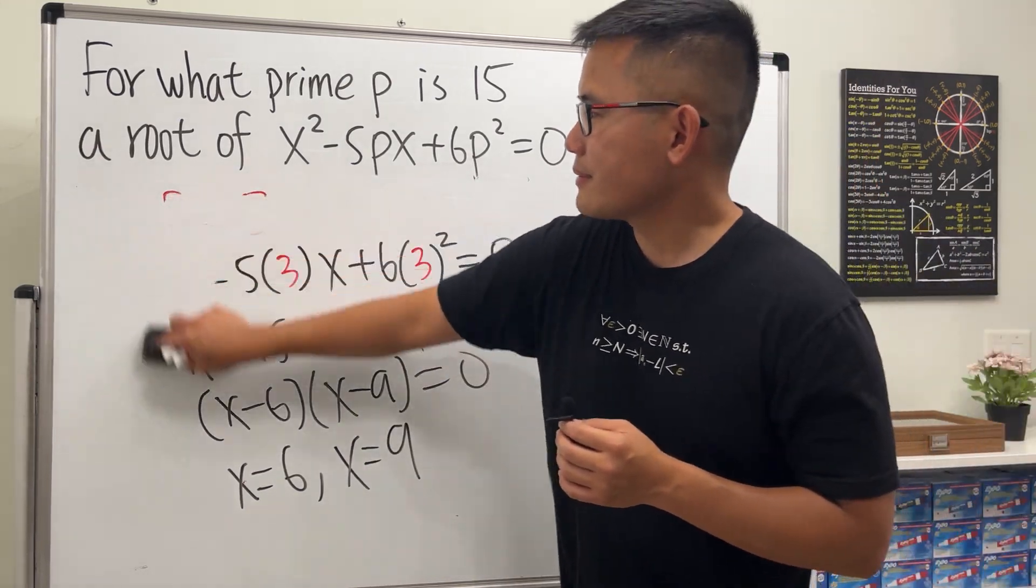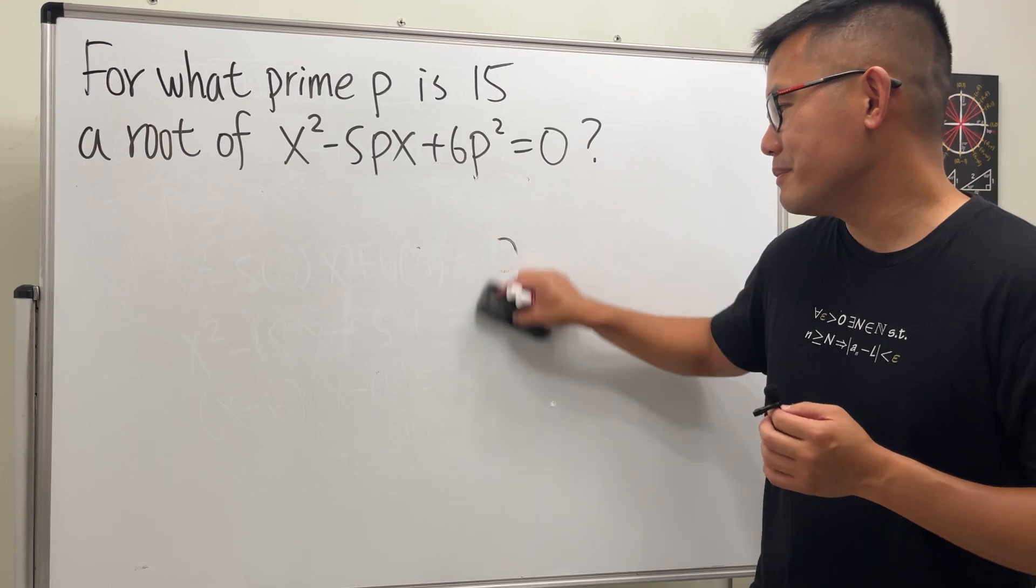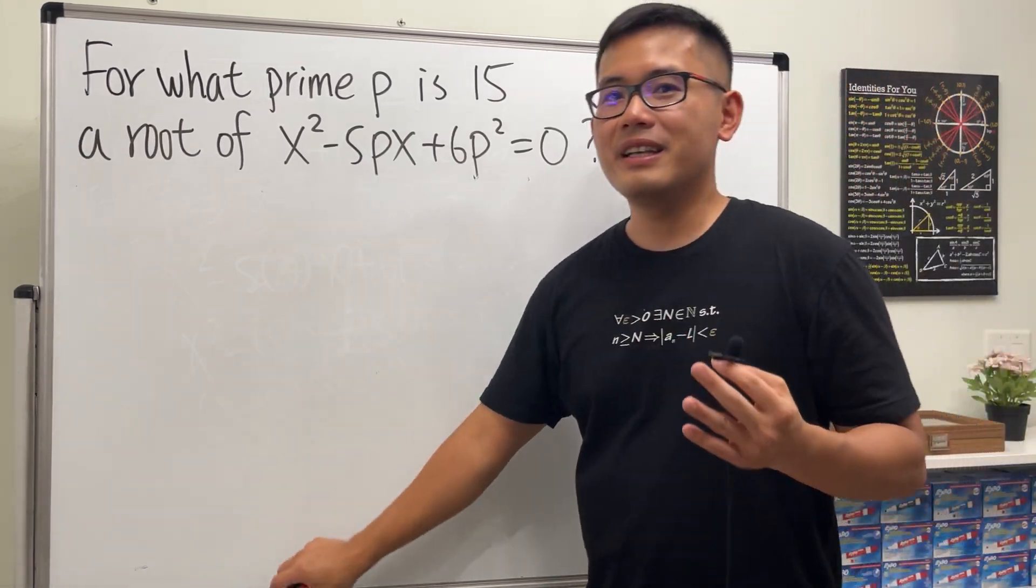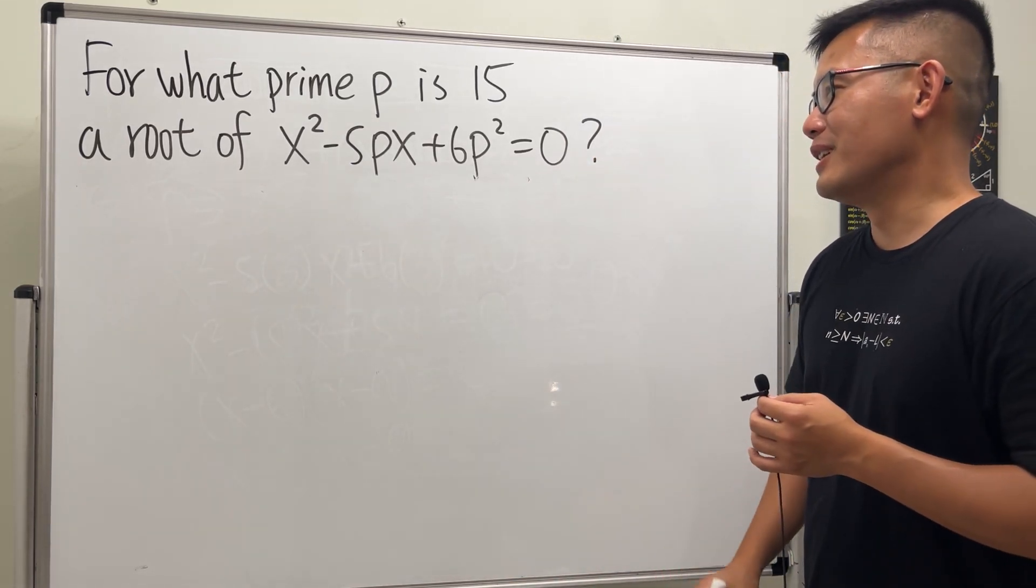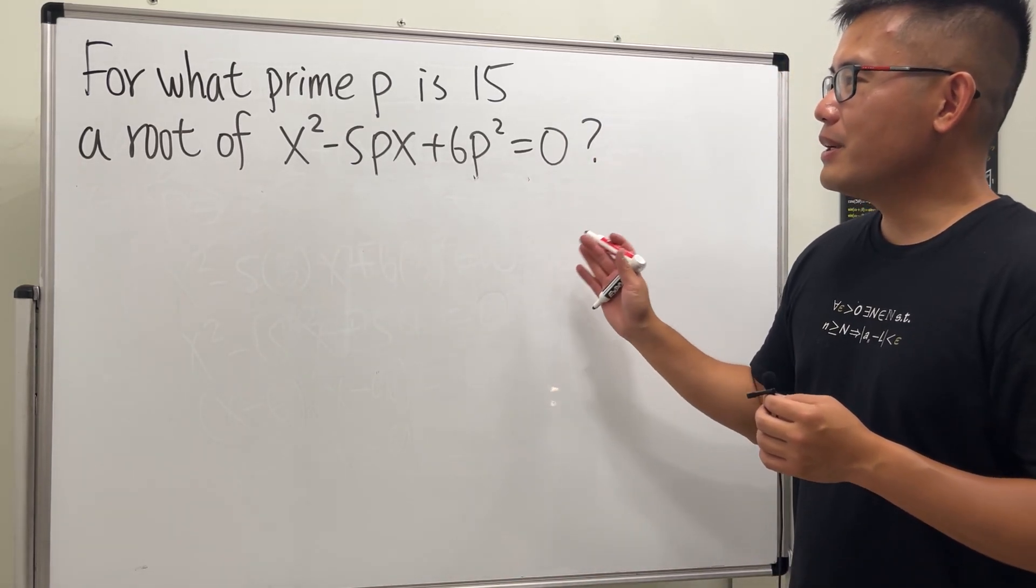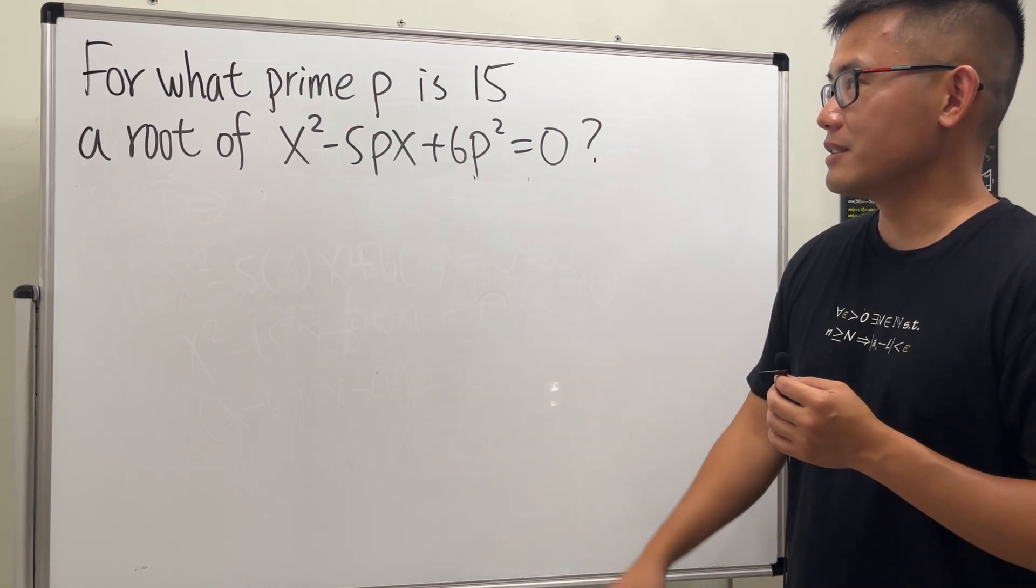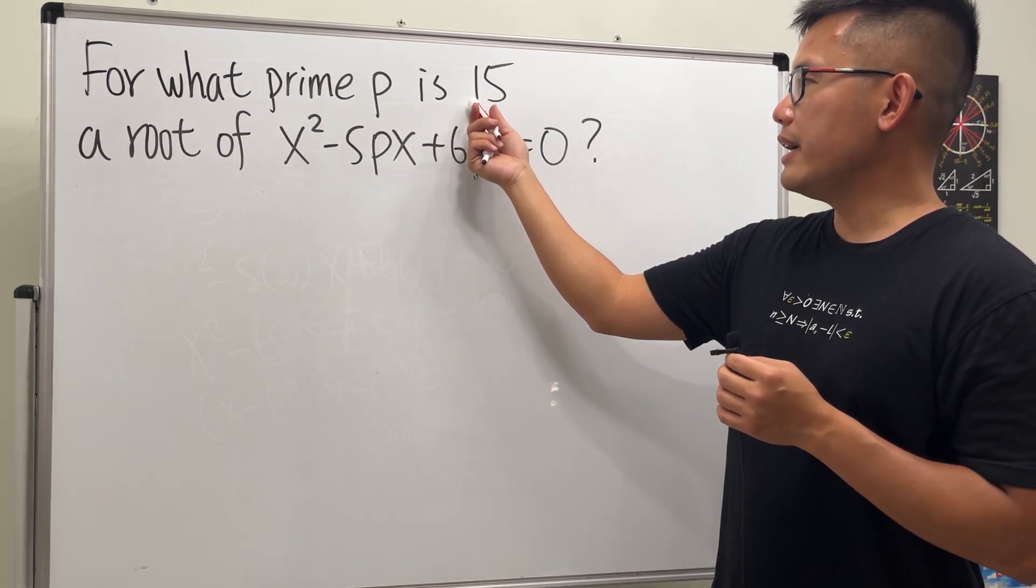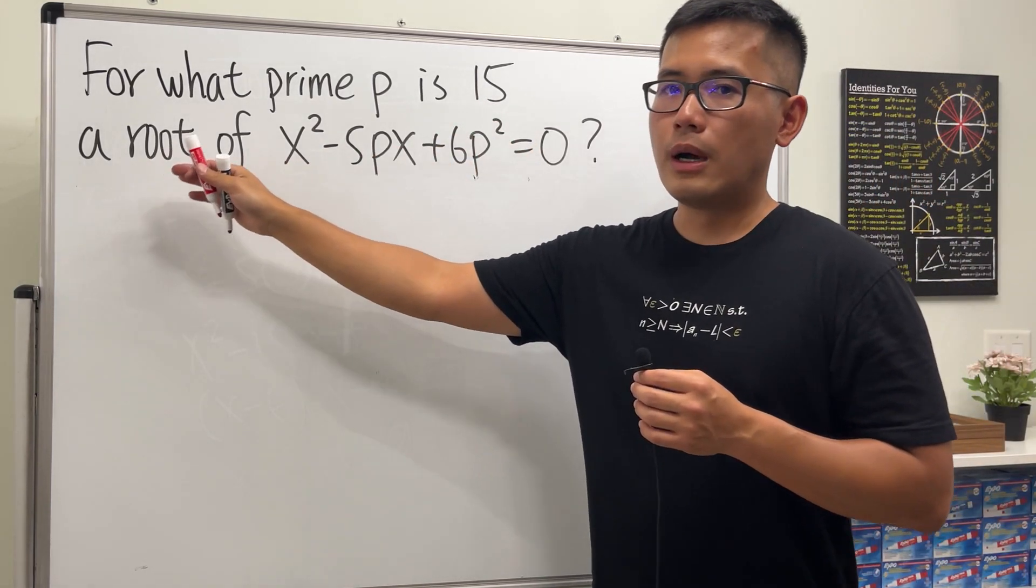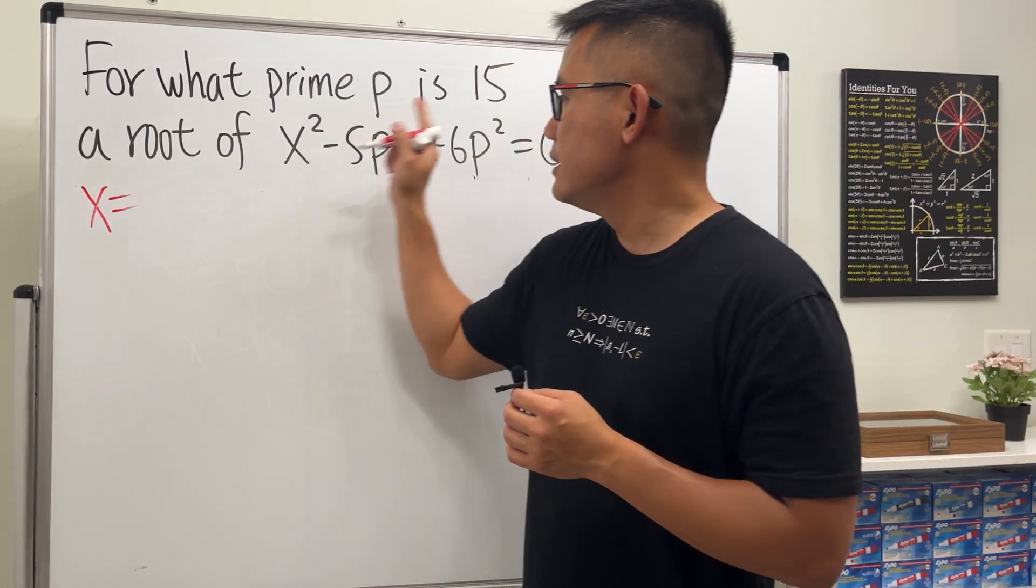Okay, what do we do next? Try another prime number? You could, because the next prime number is actually the answer, P = 5. But let's see how we can actually legitimately do it, especially when using polynomial terms and things like that. Here's the deal: whenever the question is saying 15 is a root to a polynomial equation, in general that means x equals this number is a solution to this.